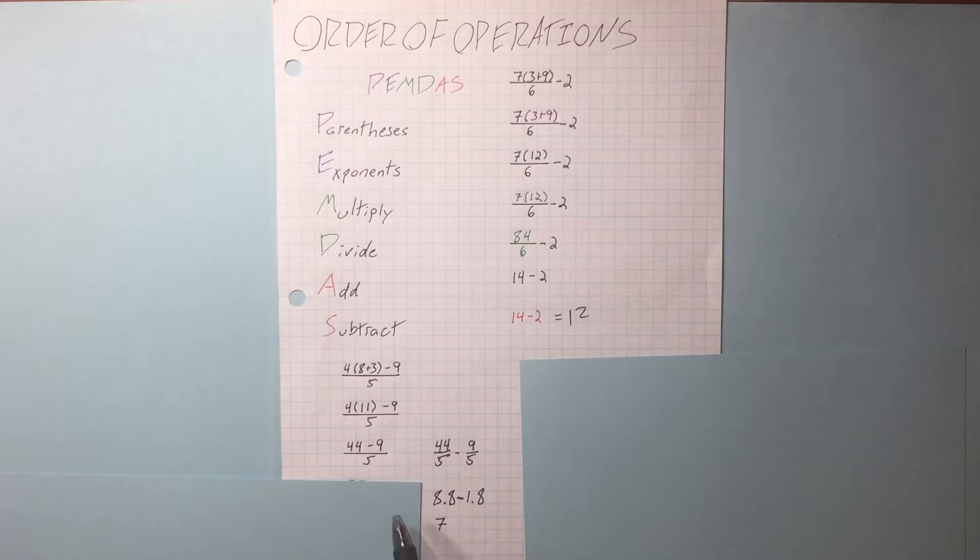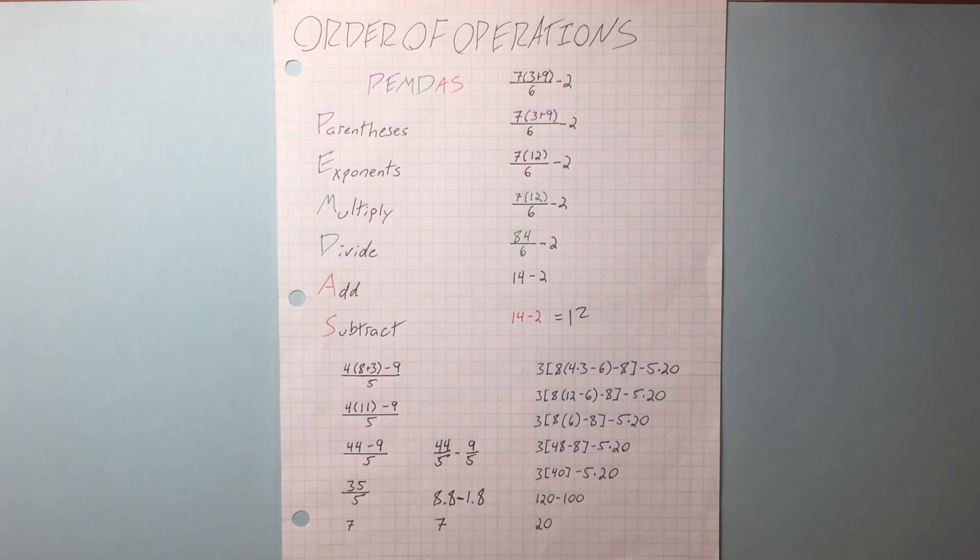There's an easier way to do this. You can consider the numerator its own thing, like it had parentheses around it. Do our subtraction, then we do our division, and we get the exact same answer. Cool.